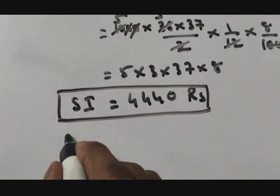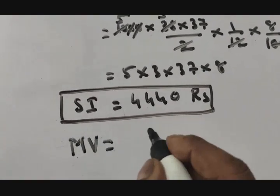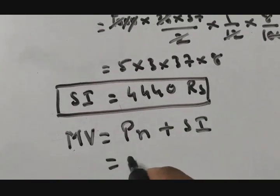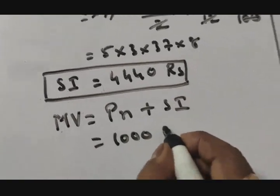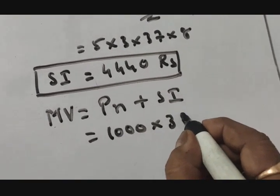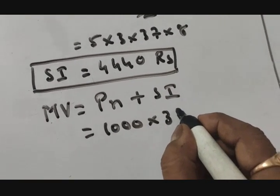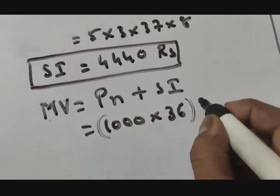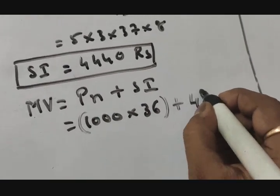But here our sum does not end. You have to find out maturity value. So maturity value equals P multiply by n plus SI. What is P? 1000 rupees. For how many months? Mrs. Goswami is paying for 36 months, plus SI.